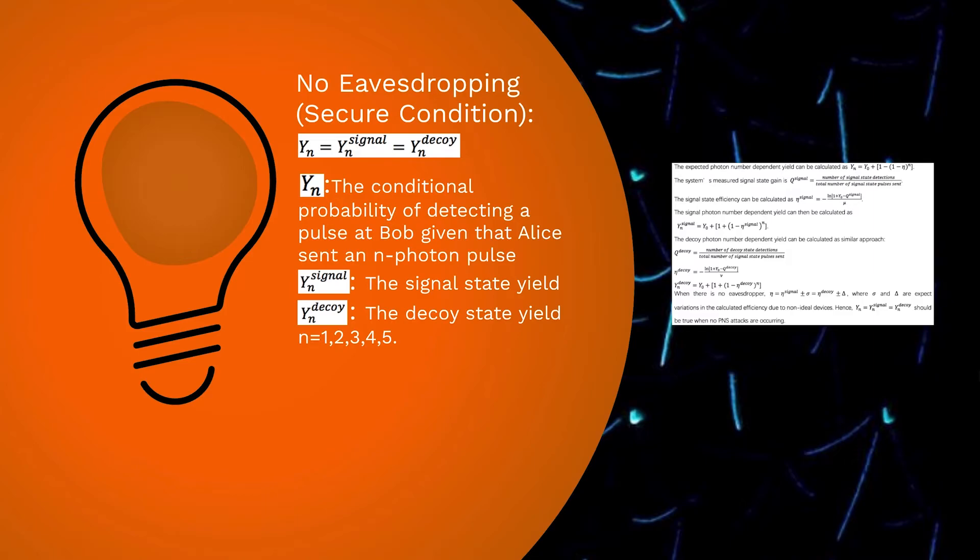The security condition Y_N equals Y_N^signal and Y_N^decoy should always be true when operating normally, because the estimate yield depends only on the quantum channel efficiency and the number of photons per pulse. They are independent of the state type.